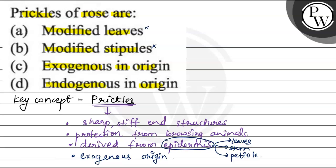Exogenous in origin. This is correct. Because epidermis is derived from exogenous origin. Endogenous in origin. This is incorrect. Endogenous is derived from deep tissues. Epidermis is a superficial tissue. That's why prickles is exogenous origin.